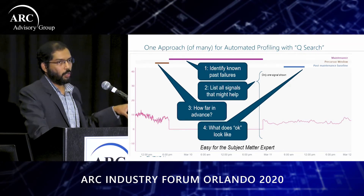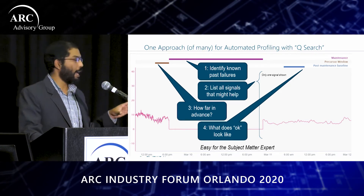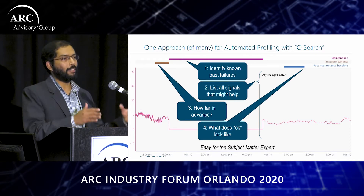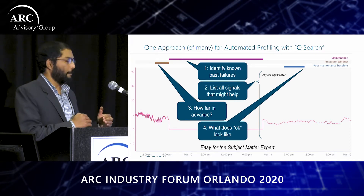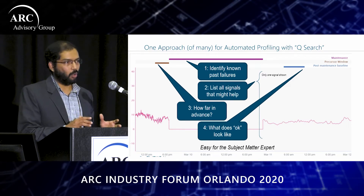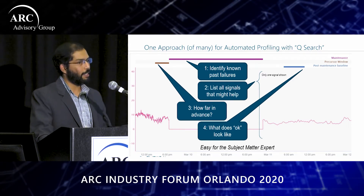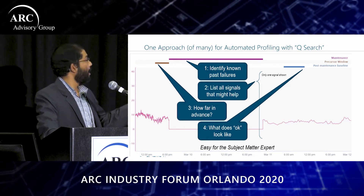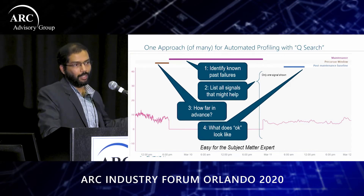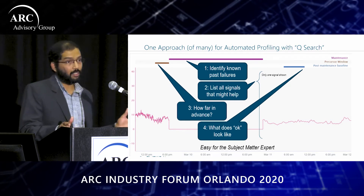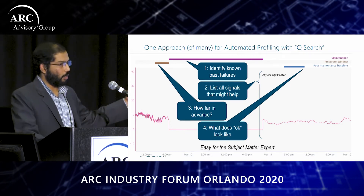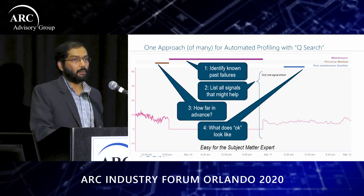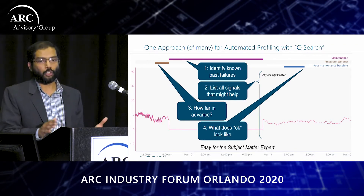Step three is to tell the model approximately how much time in advance of the fault there is relevant information in the signal. It depends on the system. For fast-moving systems, signals change so rapidly that you may only need a few minutes advance notice. For slow-moving systems — in our case, dealing with currents and relays — we settled on a one-hour time frame. The last step is to tell the model what normal behavior looks like.